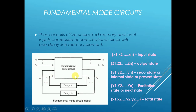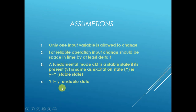Whenever the input changes, the next state capital Y will become the present state small y. This transition has a small delay element of delta-t. For a stable condition of the asynchronous logic circuit, small y must equal capital Y, meaning the delay is effectively zero. When small y does not equal capital Y, the present state and next state are not equal — that is called an unstable state.